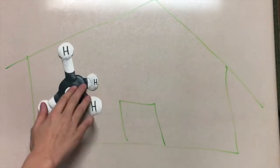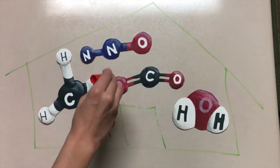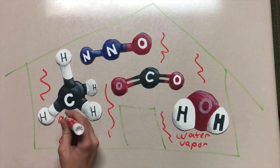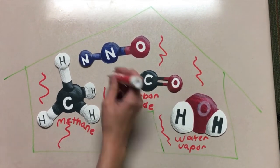Now the greenhouse effect is the term used to explain how the Earth is warmed by gases trapped in the Earth's atmosphere. These gases are methane, water vapor, carbon dioxide, and nitrous oxide.